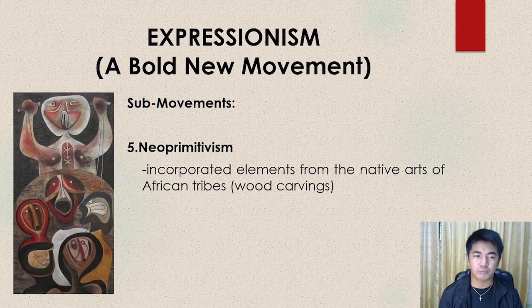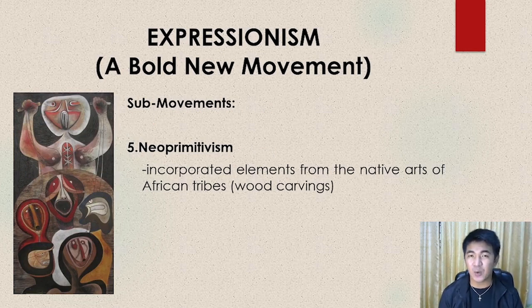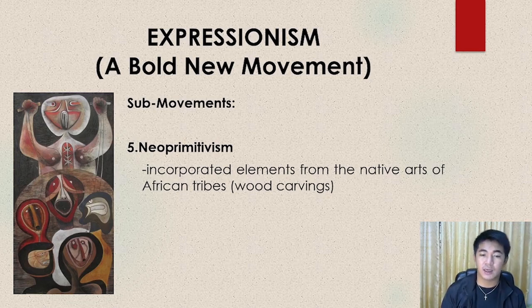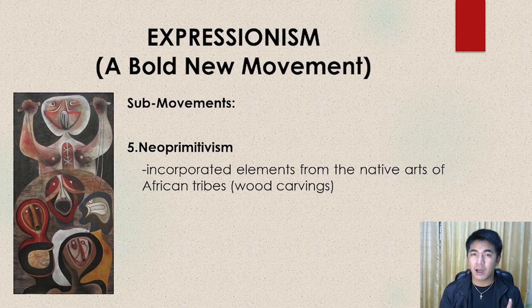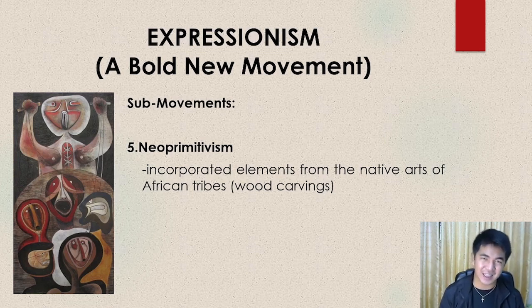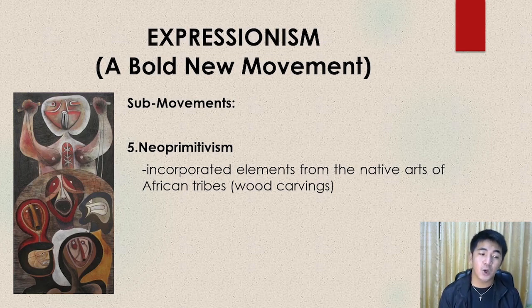Next is Neo-Primitivism. Neo means new. Primitive deals with native, tribes, and ethnicity. Combining these words — new and ethnicity — it means a new way of presenting the elements of the native, the elements of tribes, and the elements of ethnicity. Like incorporating elements from the native arts of African tribes, which includes wood carving.